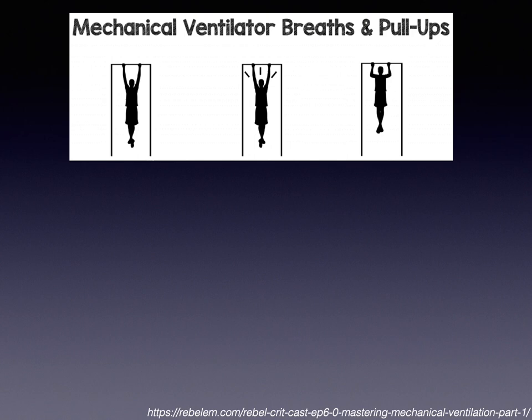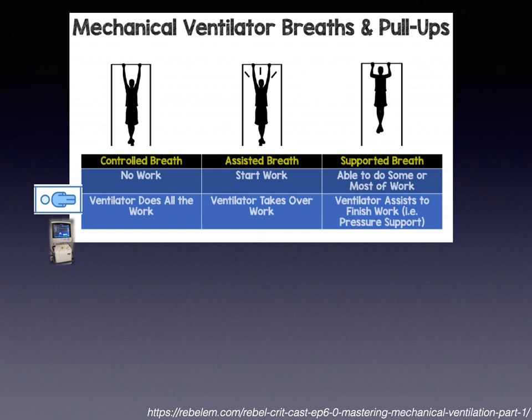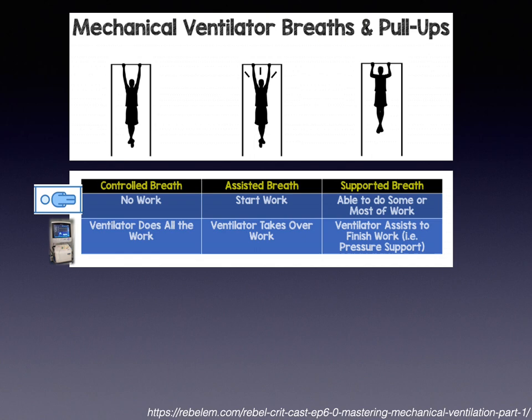During the time when the patient is on mechanical ventilators, the machine will take the workload from the patient. We can separate this into different groups. Control breath means the patient does not do any work at all — the ventilator does all the work, for example a patient with ARDS under neuromuscular blockade. Assist breath means the patient can start the work on their own, and the machine takes over after that. This is one of the common modes — assist control.